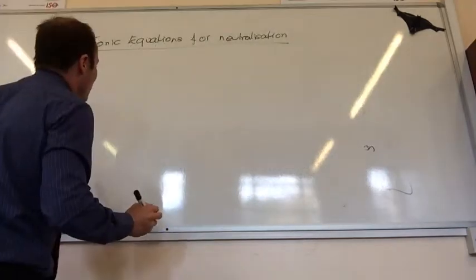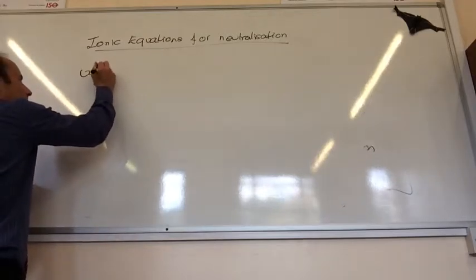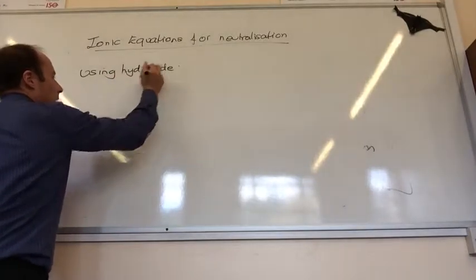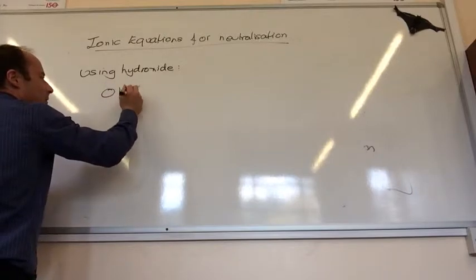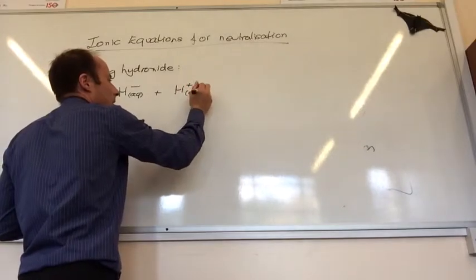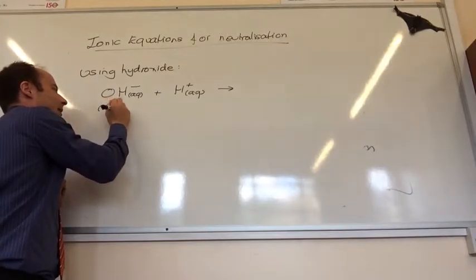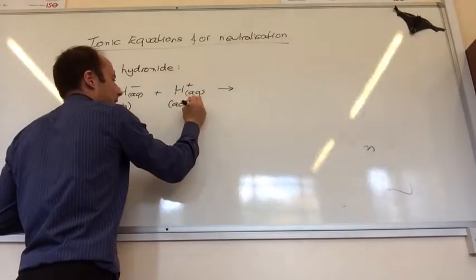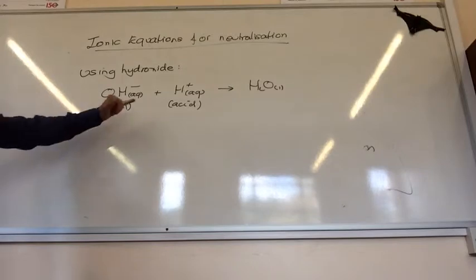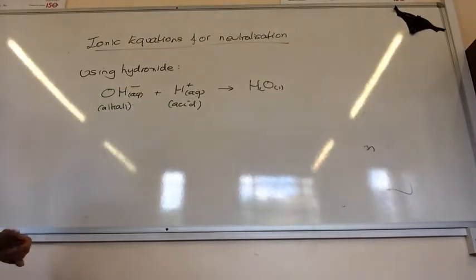You can check the ionic equations for neutralisation. The first one is using a hydroxide ion: you start with OH minus (aqueous, generally) reacting with H plus. OH minus — that's from your alkali — reacts with H plus — that's from your acid — and that gives me water. So that's why you always make water in these neutralisation reactions, because you've always got hydroxide and H plus.